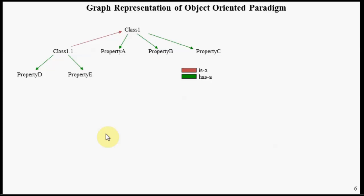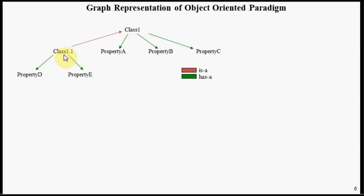The object-oriented paradigm can be represented as a graph problem. Here we have a class called class 1, which has properties A, B, and C, and it has a relationship between the class definition and its associated properties. We also have another class called class 1.1 with properties D and E. We see a relationship here between these two nodes — an 'is a' relationship, meaning that class 1.1 is a specialization of class 1.